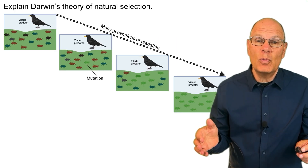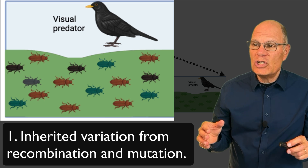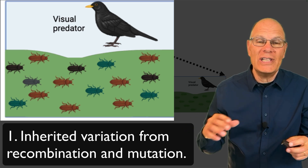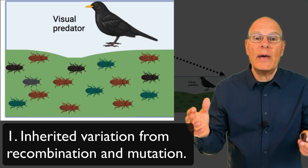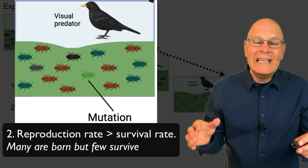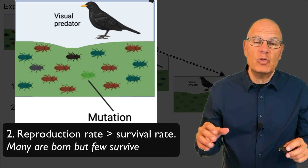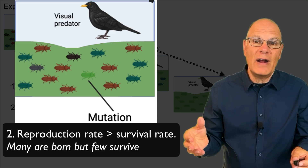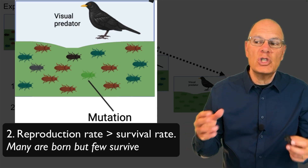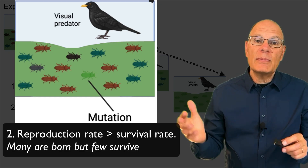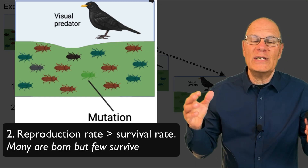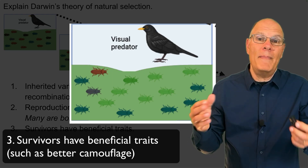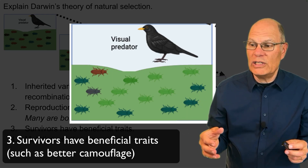So how does natural selection work? In any population, there's variation — the kind that matters is inherited variation in the genes, which comes about through recombination and mutation. The reproduction rate exceeds the survival rate, even in slow-breeding populations. This is sometimes summarized as: many are born, but few survive. The survivors have a beneficial trait that gave them some type of advantage.